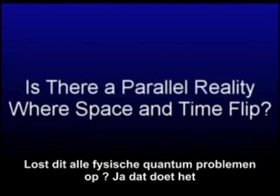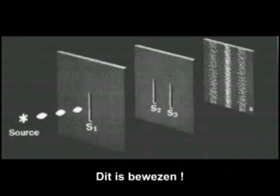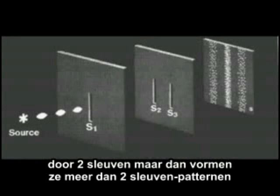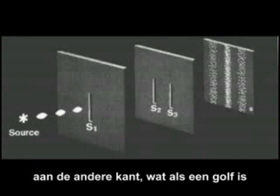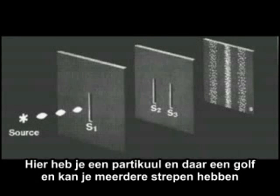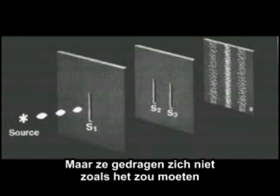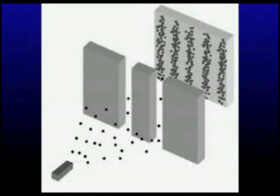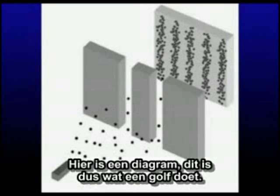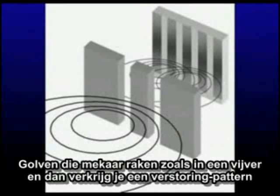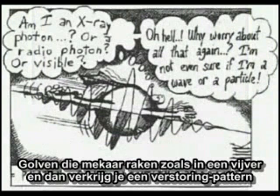Does this solve all the basic quantum physics problems? It does, and that's been proven. It goes back to the two-slit experiment where you have single electrons that move through two slits, but then they form an interference pattern of more than two slits on the other side, which is like a wave. So here you have a particle, but over here you have a wave, and you can even have multiple strikes at the same time. Atoms and electrons are not little bitty chunks of matter — they're just energy. Here's another diagram: a wave is just like if there was a liquid, and it hits a barrier, it ripples like two waves on a pond coming together, and that's how you get your interference pattern.